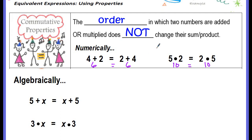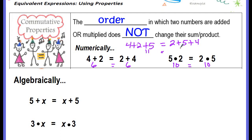This also works if you have three numbers. If you have 4 plus 2 plus 5, you can change the order of the numbers you're adding — maybe you want to do 2 plus 5 plus 4 — and you're still going to get the same answer. 4 plus 2 is 6, plus 5 is 11. Over here, 2 plus 5 is 7, plus 4 is 11. The one thing to note is that the operation has to be all addition or all multiplication. This does not work for subtraction, and this does not work for division.